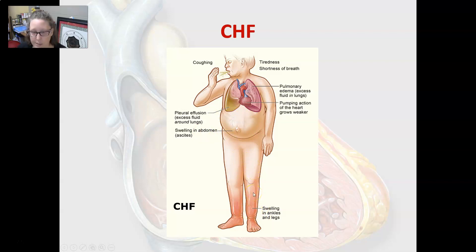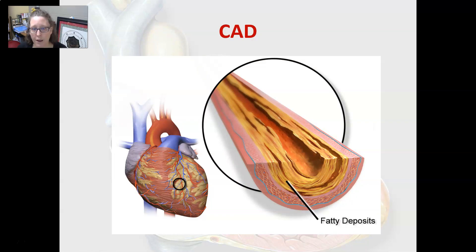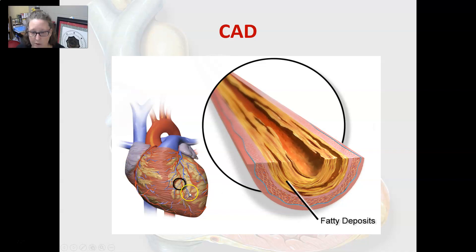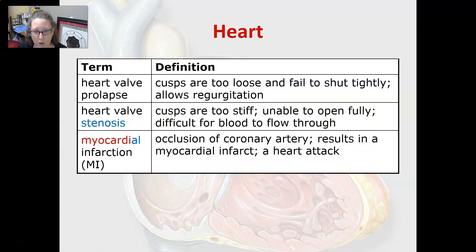Coronary artery disease is due to fatty deposits called atherosclerosis inside the coronary arteries — the arteries that feed the heart muscle. A total blockage can result in necrotic tissue downstream. Heart valve prolapse is when the cusps are too loose in the valve, so they fail to shut tightly and allow regurgitation — blood backflows instead of flowing forward.